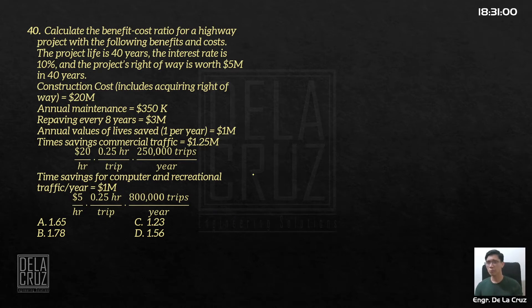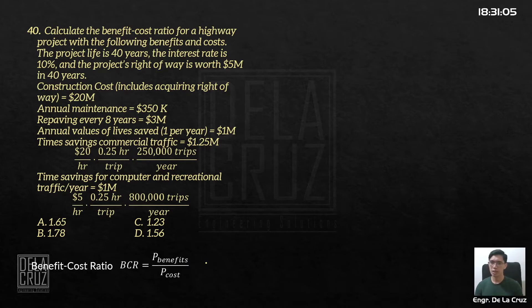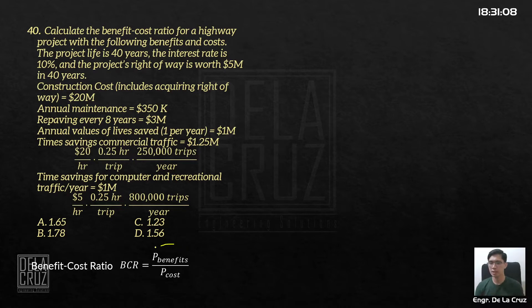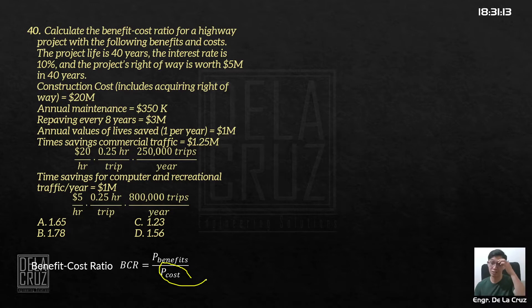What is the benefit-cost ratio? The benefit-cost ratio is the ratio of the present worth of net benefits to the present worth of the cost.